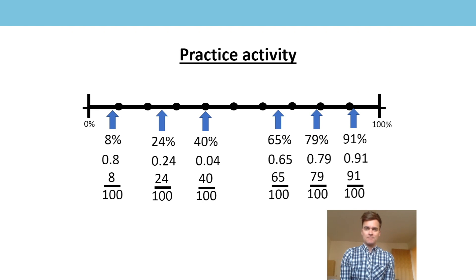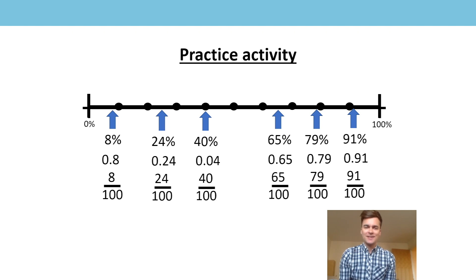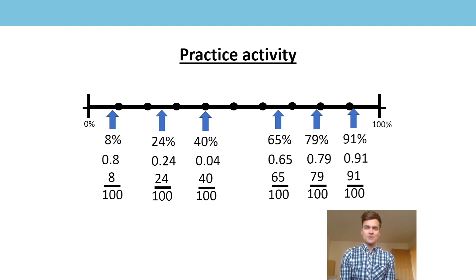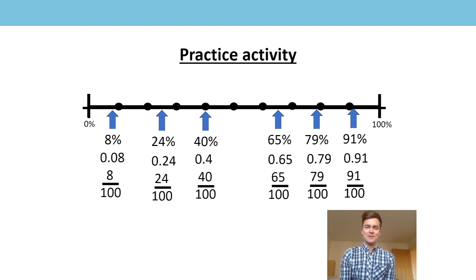What do you think? Are you happy with those? Which would you change? Good spots. 8% is 8 hundredths. I've represented it with 0.8, which is 8 tenths — 80 hundredths. That needs to change. Any others? Good. 40% is 40 hundredths, but 0.04 would be 4 hundredths — that's 4%. So those two would change, and then those equivalents would be correct.